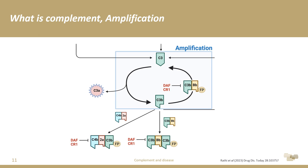As the amplification loop spins around, it releases a proteolytic fragment of C3 called C3A. C3A is an anaphylatoxin — a chemoattractant that recruits circulating immune cells and activates them to do a whole range of things, including the release of pro-inflammatory cytokines.